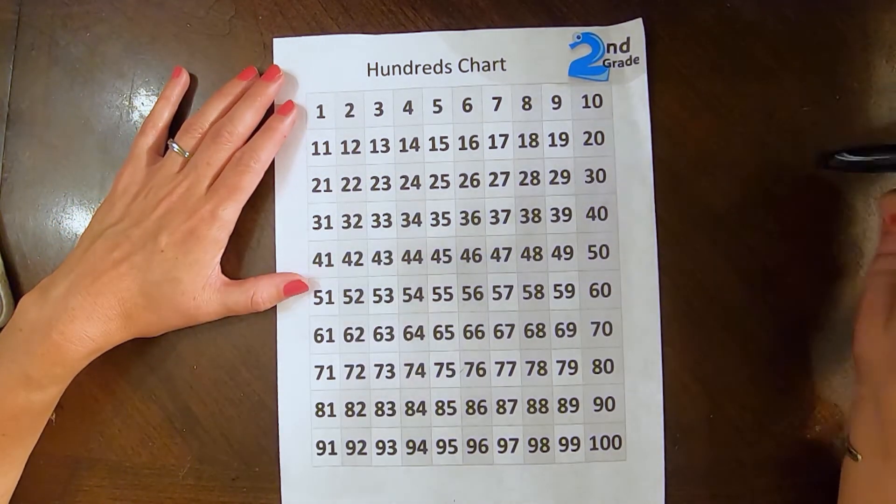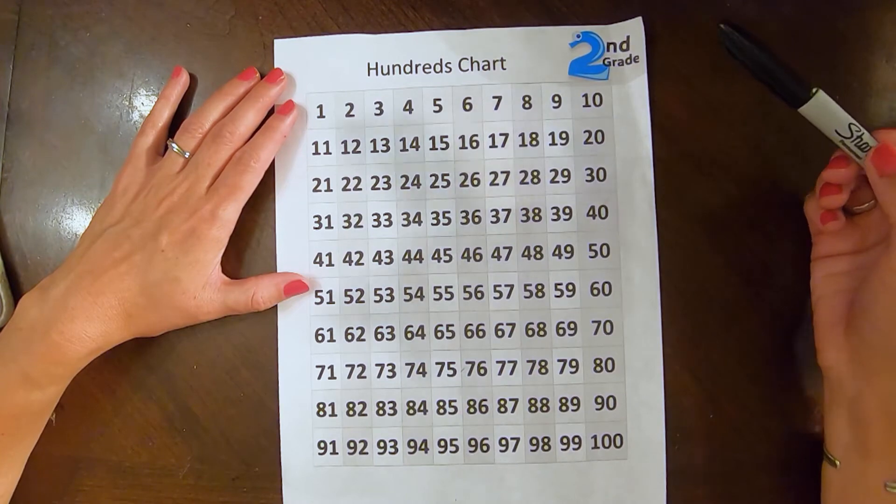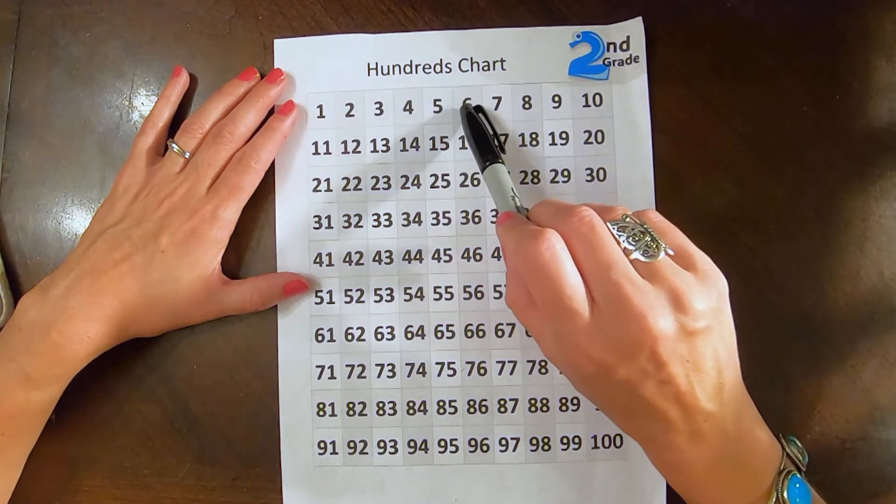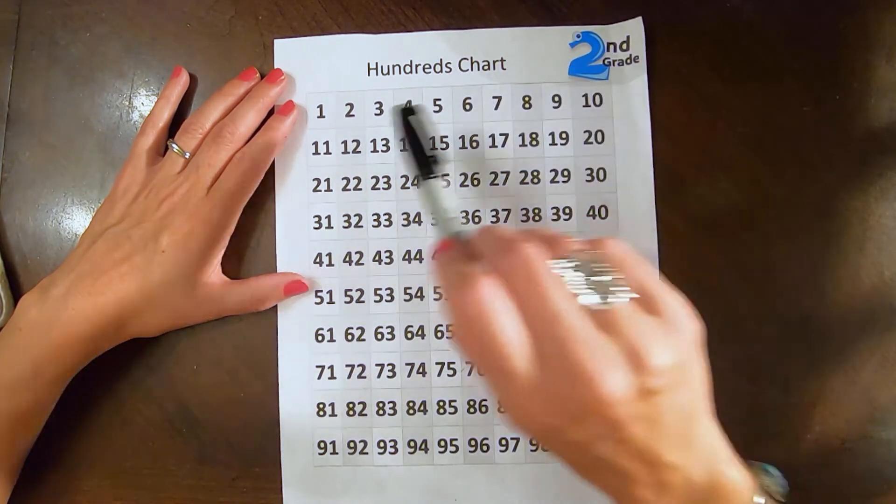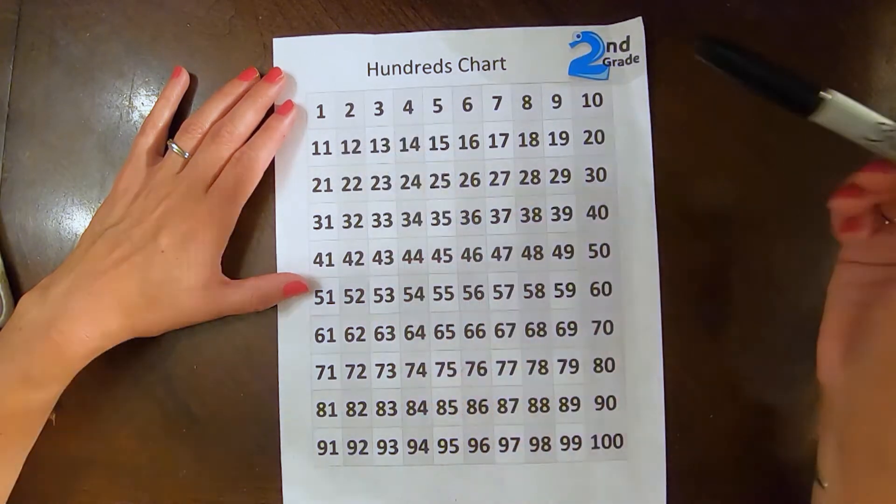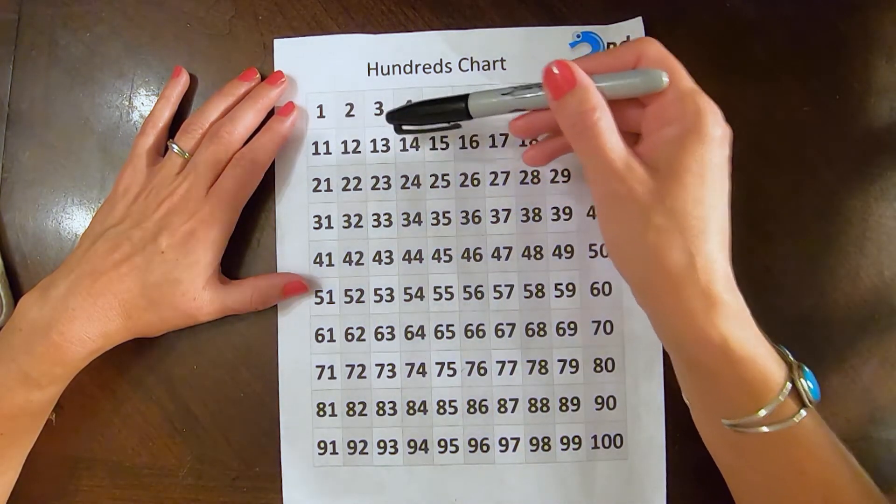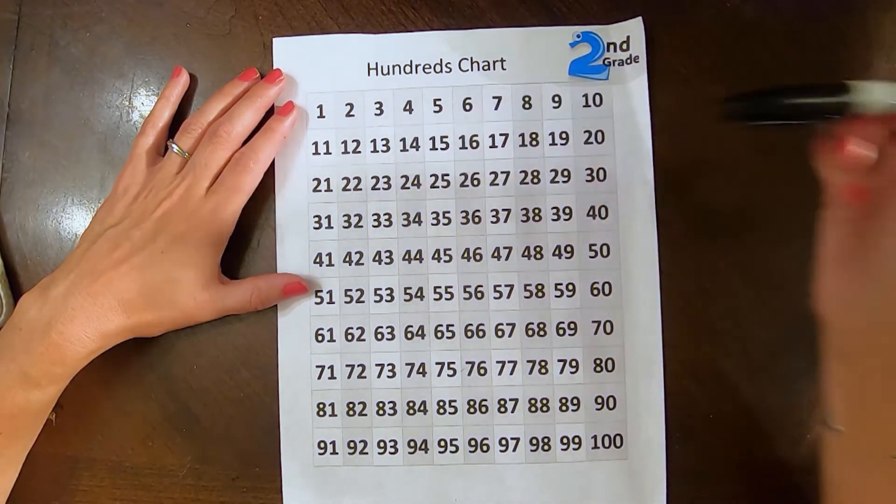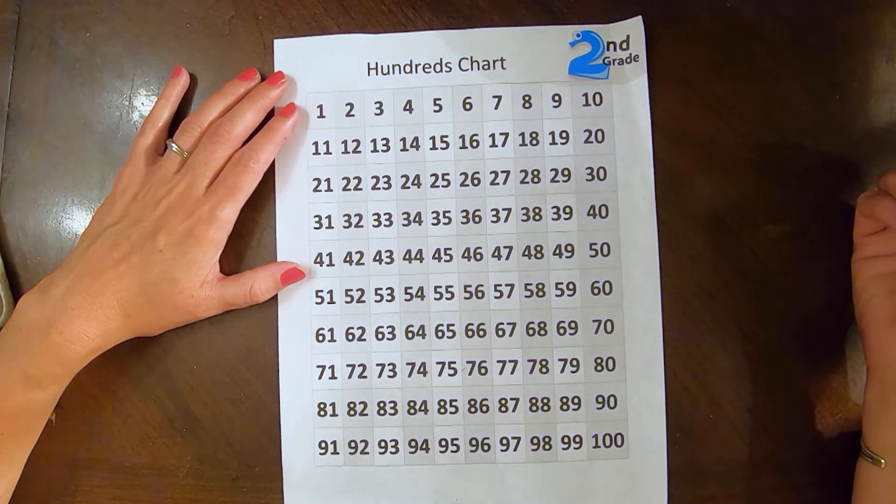Okay, let's go ahead and see how many numbers are between 3 and 13. 1, 2, 3, 4, 5, 6, 7, 8, 9, 10. So we know that 3 adding 10 equals 13.